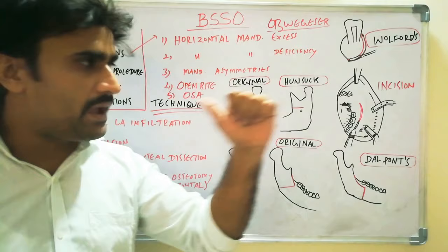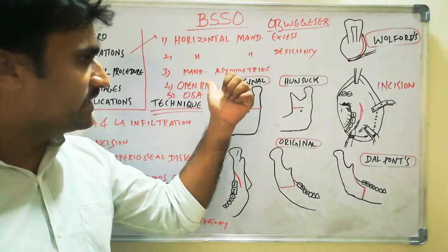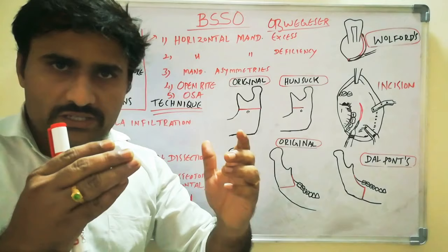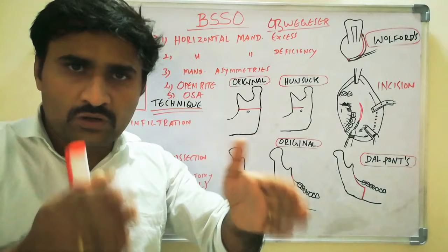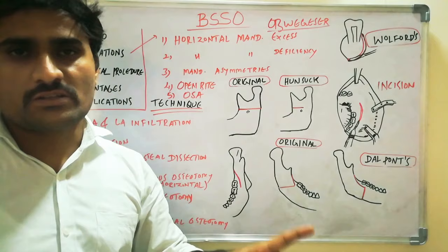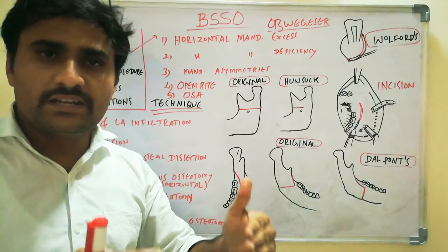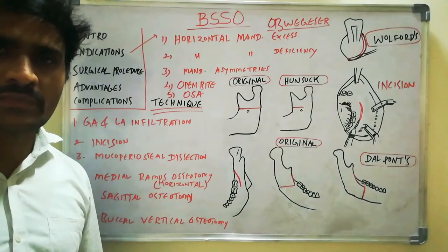The third indication is mandibular asymmetries. We can also do BSSO in open bite cases — rotating the mandible anticlockwise — and in deep bite cases, rotating the mandible clockwise. BSSO can also be done for obstructive sleep apnea patients; by doing mandibular advancement, we increase the nasopharyngeal airway space.